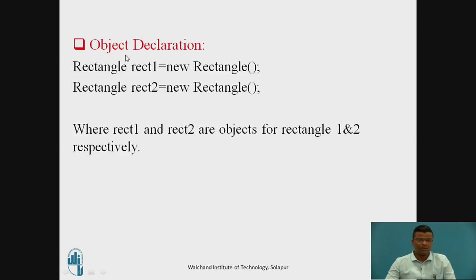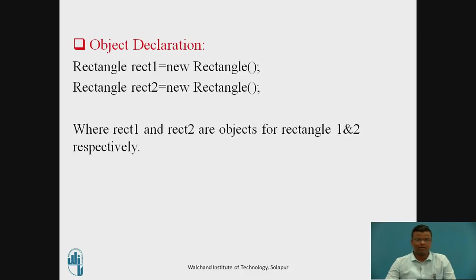Object declaration. Object declaration can be done with the help of the following statements. Rectangle is our class name. Rect1 is an object name. New is a constructor and Rectangle is again the class name. Rectangle rect1 is a declaration of an object, and rect1 is equal to new Rectangle, which will be called as initialization of an object. This statement is for rectangle 1. Similarly, we can write the statement for rectangle 2.